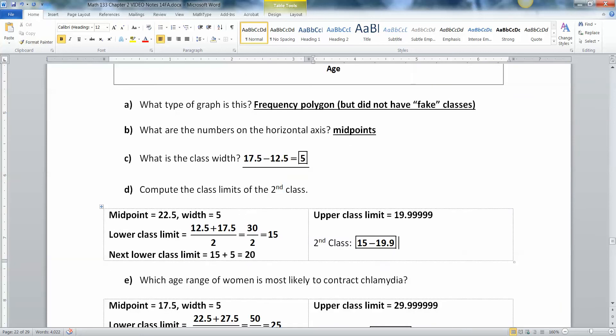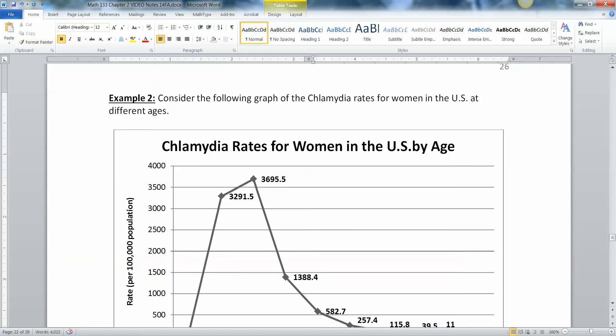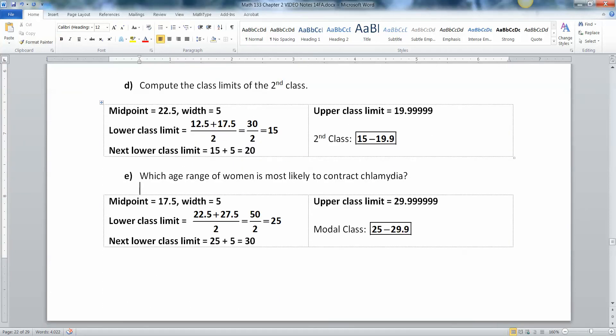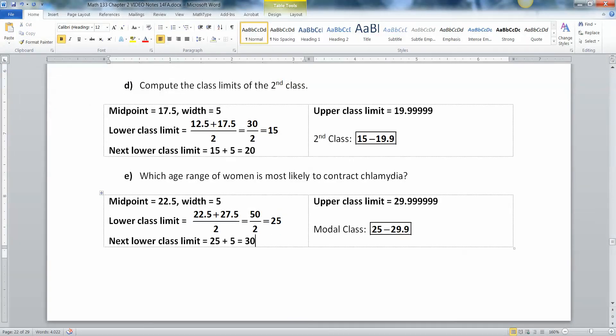All right, now which age range of women is most likely to contract chlamydia? So that would be right here. The midpoint is 22.5 right there. So I would take the same argument we just did. I would say the midpoint was 22.5. And the width is five. So the lower class limit is 22 plus 27 divided by 2. That's 50 divided by 2, which is 25. Then use the width to find the next lower class limit, which would be 30. So that means the upper class limit is 29.99999 forever. And then just round to however many you want. And realize that when you're talking about the most likely, what you're talking about is what we've run into before, something called the modal class. That is the one that has the highest frequency.